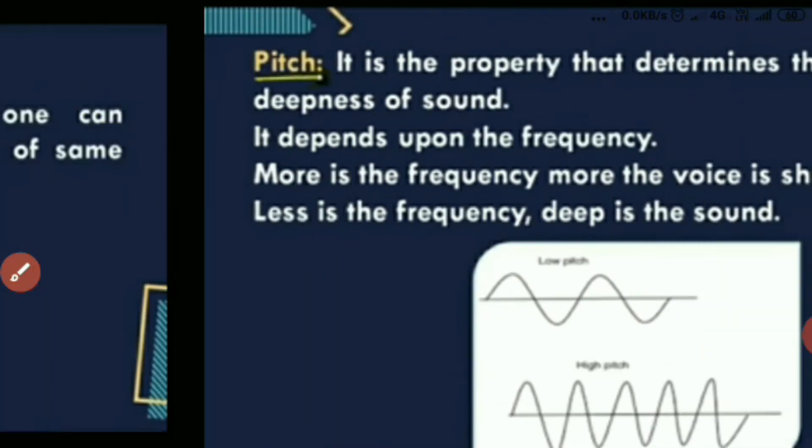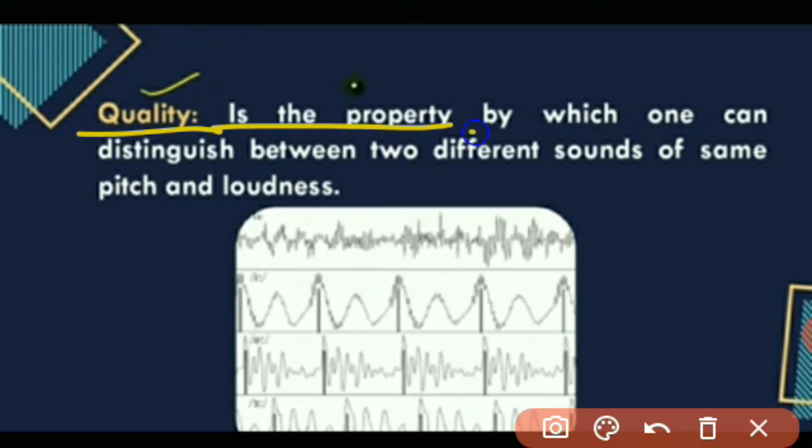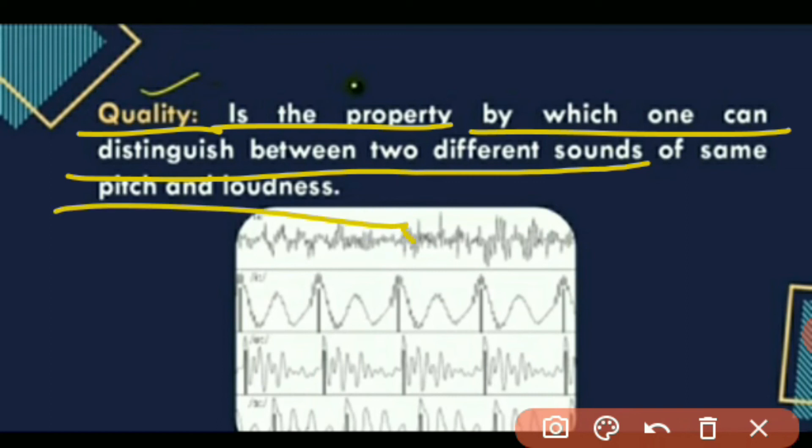Next is quality. Quality is the property by which one can distinguish between two different sounds of the same pitch and loudness. For example, even if pitch and loudness are same, we can tell which friend is talking in another room by the quality of their voice.